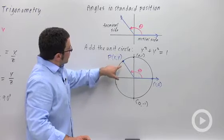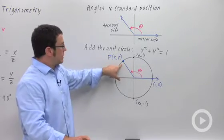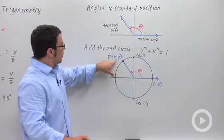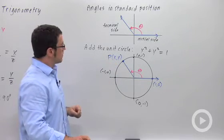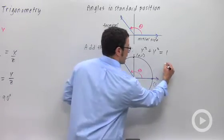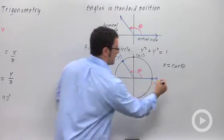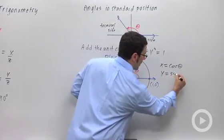Same angle. We want to mark the point where the terminal side intersects the unit circle. That point will have coordinates (x, y). We define cosine to be the x value and sine to be the y value.